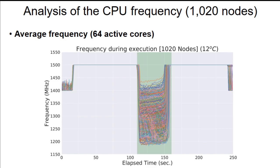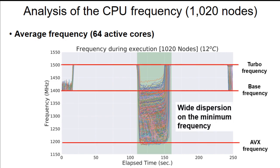And we have analyzed the CPU frequency during the LINPACK execution in order to investigate the reasons for this performance degradation. And here is the plot of the average frequencies from the 64 active cores during the LINPACK execution. And the red lines shows the base, turbo, and AVX frequencies based on the product specification. And the central part, marked in green color, represents the AVX throttling region. And we can observe a wide dispersion on the minimum frequency. And looking more closely on this green region, we could observe three different frequency throttling patterns.